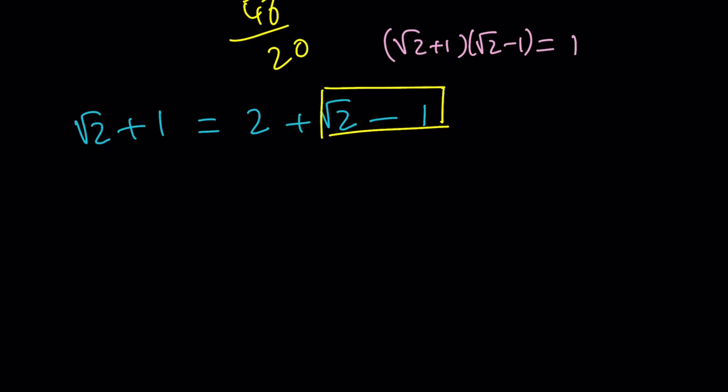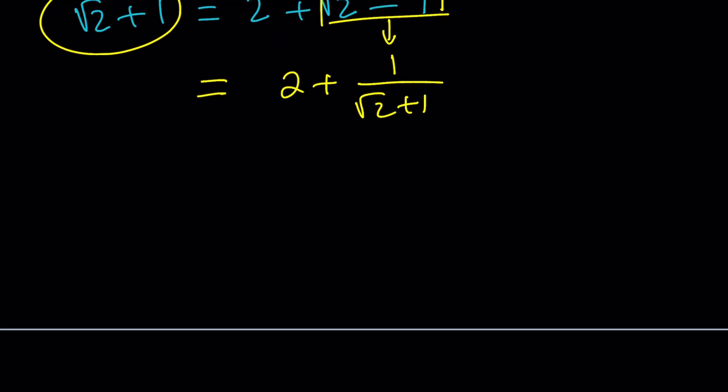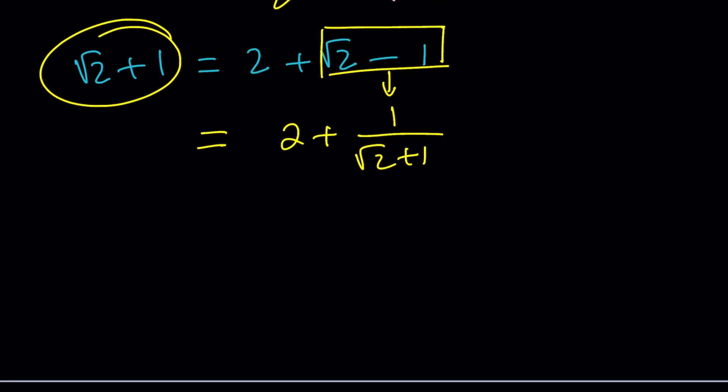So here, I can actually replace this with 1 over root 2 plus 1, which is nice. And then add the 2 to it. And I started off with this, remember. Don't forget that. Now I got root 2 plus 1. And again, I'm going to do the same thing that I did here. Split it up into 2 plus 1 over 2 plus root 2 minus 1, just like before.